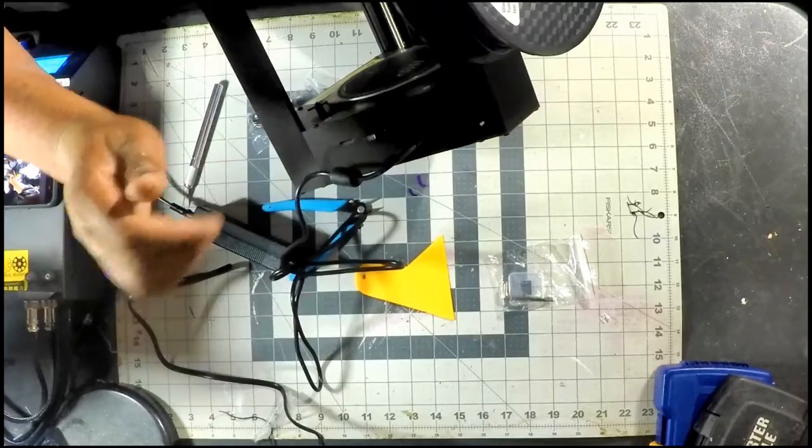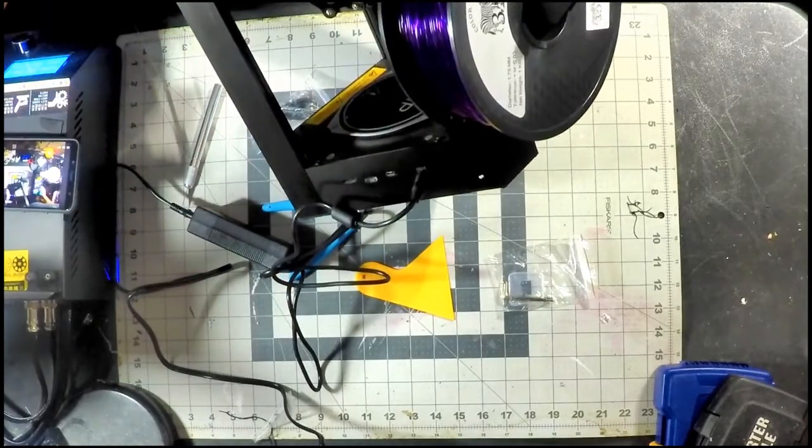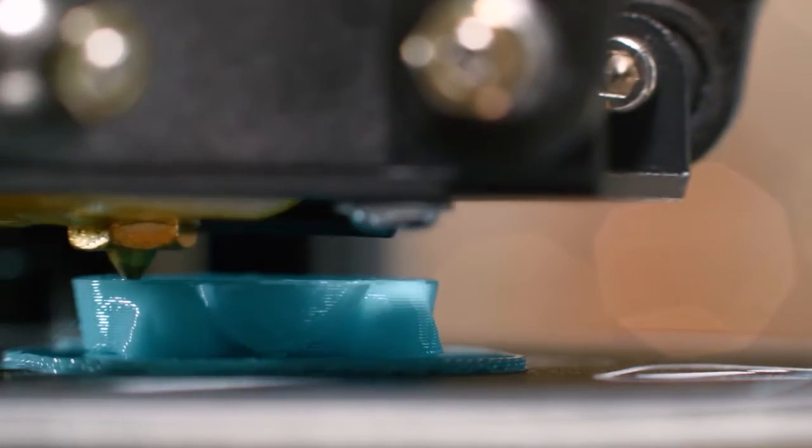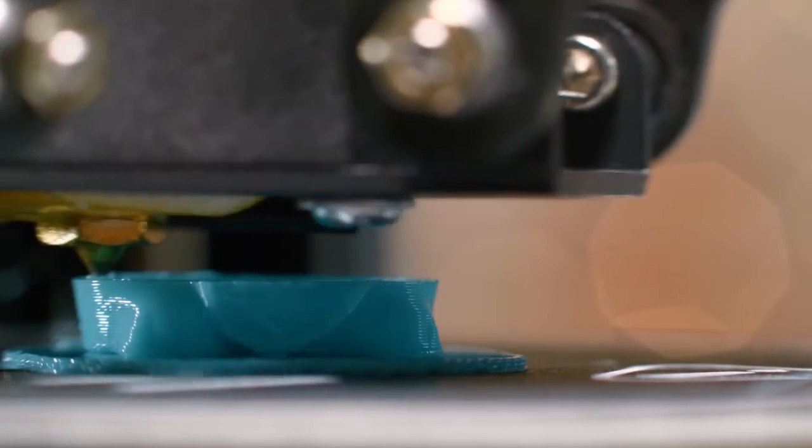The build area is open, but this model doesn't really have any problems maintaining a consistent temperature. You can always create an enclosure for it if you'd like. We were pleased to find that the simple construction provides plenty of scope for modification, including possibly expanding its build volume slightly.